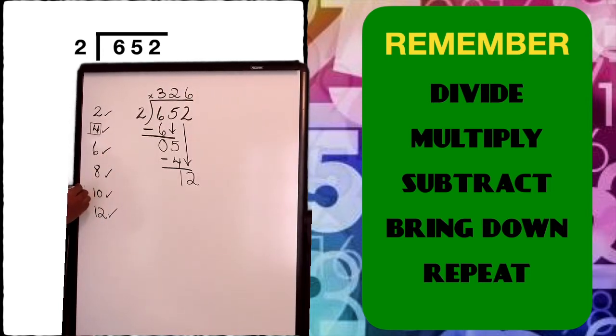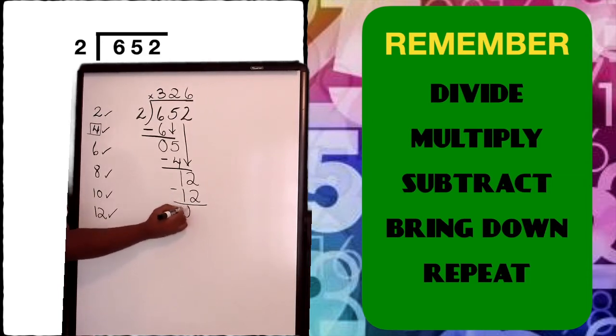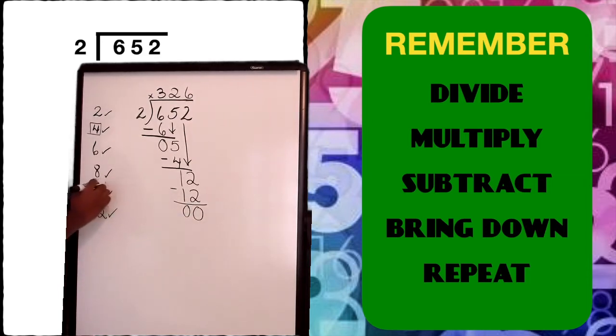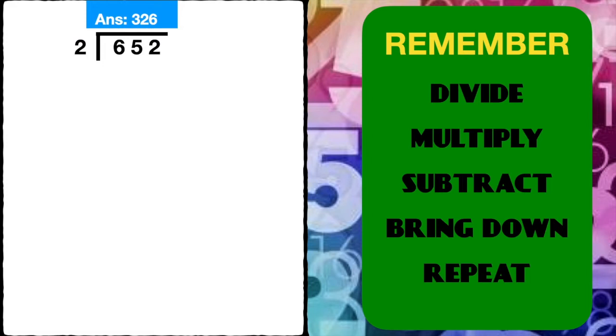I put that in my working part. And now I multiply. Two times six gives me 12. And when I subtract, I'm left with nothing. So two can evenly divide into 652. Let's see if we were correct. Awesome. Your answer should be 326.